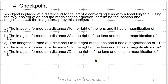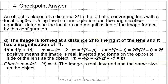An object is placed at a distance 2F to the left of a converging lens with focal length F. Using the thin lens equation and the magnification equation, determine the location and magnification of the image. The image forms at a distance 2F to the right of the lens with a magnification of minus 1. Using I equals PF divided by (P minus F) with P = 2F: I equals 2F times F divided by (2F minus F), which equals 2F. It's positive, so the image is real and inverted, forming on the opposite side of the lens. M equals minus I over P equals minus 2F over 2F equals minus 1 — same size as the object, upside down. Check: M equals F divided by (F minus 2F) equals minus 1. ✓